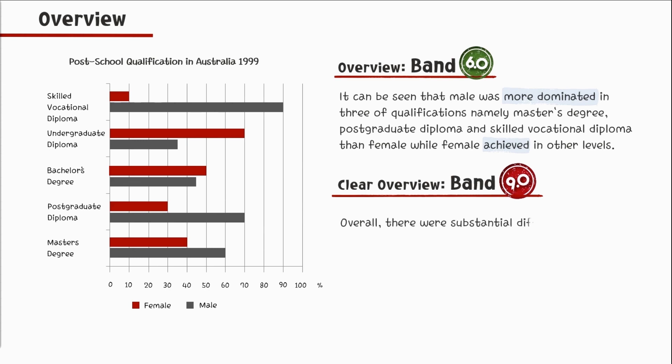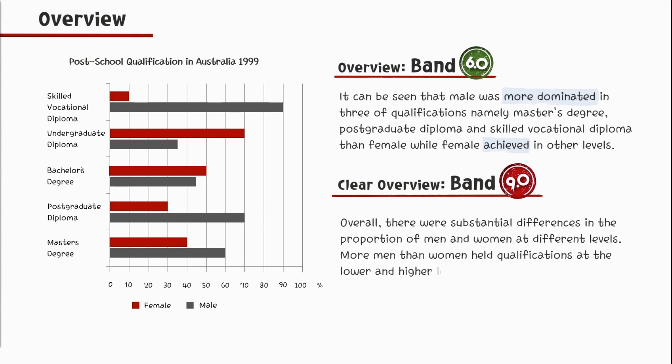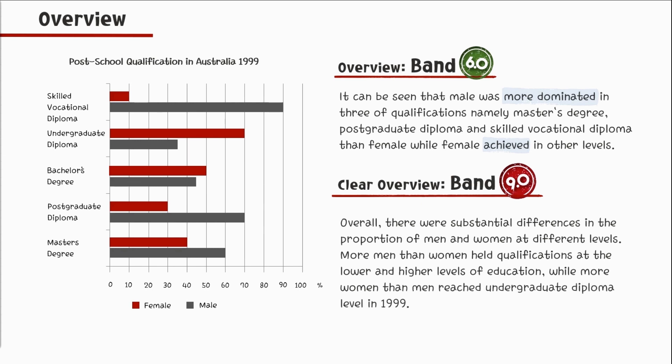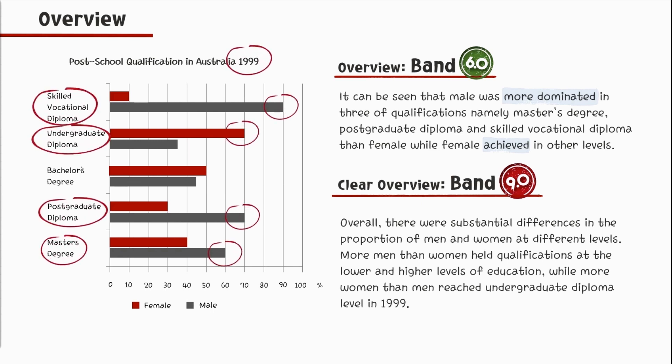The band 9 overview reads: 'Overall, there were substantial differences in the proportion of men and women at different levels. More men than women held qualifications at the lower and higher levels of education, while more women than men reached undergraduate diploma level in 1999.' This is an excellent overview — it skillfully incorporates parts of the rubric, describes the key features including the highest and lowest figures, mentions the year, and uses comparative language such as 'substantial differences,' 'more than,' and 'while.'